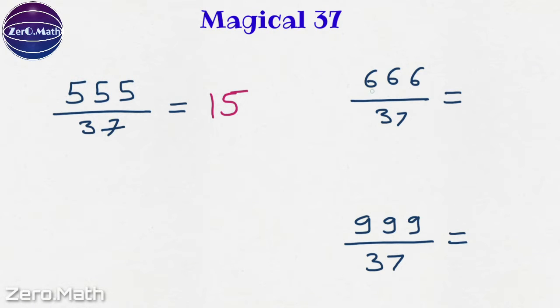Let's divide 666 by 37, the answer would be 18. It's the sum of 6 plus 6 plus 6, which is equal to 18. If we divide 999 by 37, we are going to get 27. So 9 plus 9 plus 9 is equal to 27.